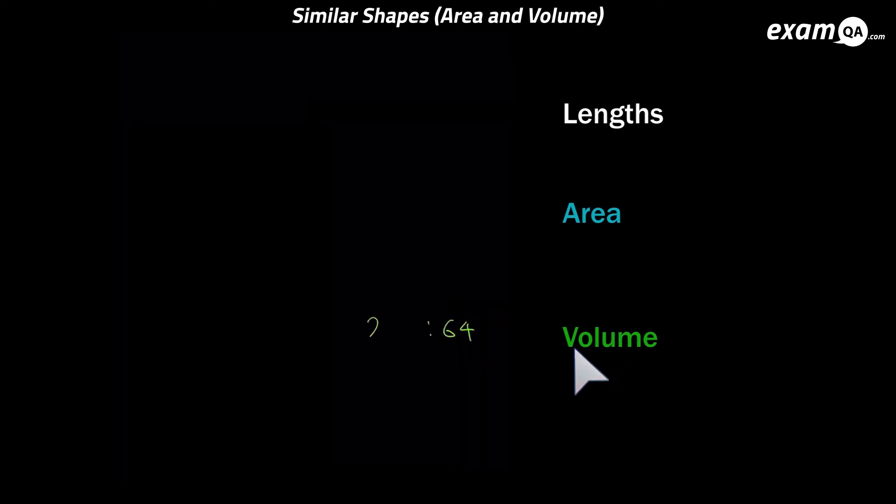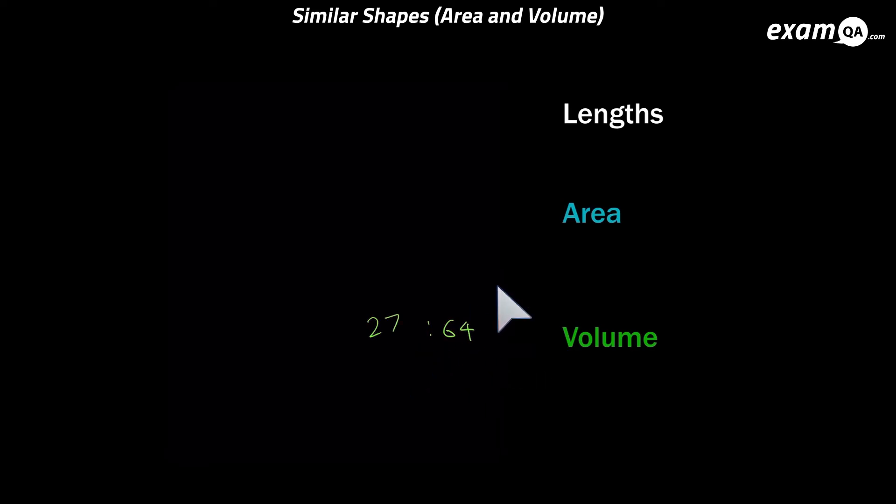So here I've got the volume scale factor and I want to get the area scale factor. Now I cannot go straight to area. I need to go back to lengths. We're always going to be going back to the length scale factor. So from lengths to volume we cubed, so we need to do the opposite which is cube root. And the cube root of 27 is 3, and the cube root of 64 is 4, because 4 times 4 times 4 is 64. And that gave us the length ratio.